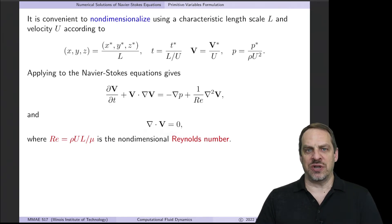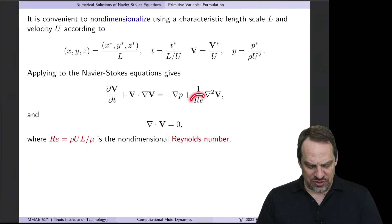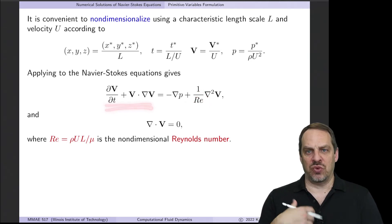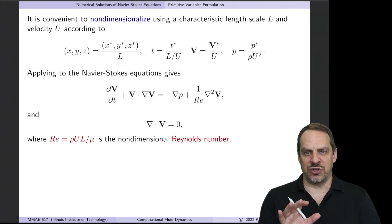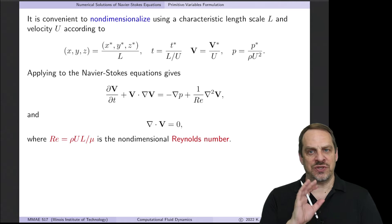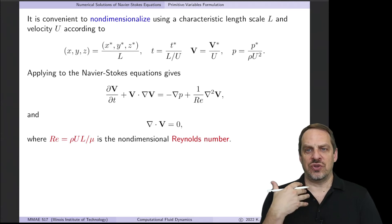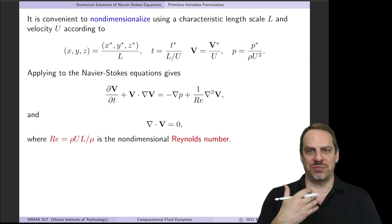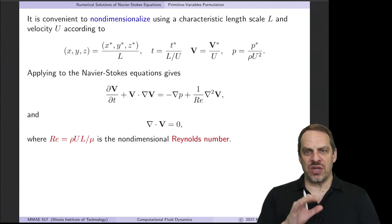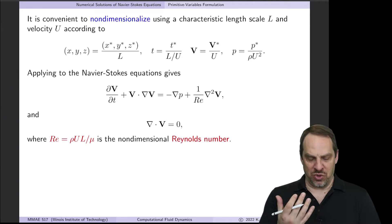We also have continuity: ∇·v = 0. One thing you'll notice is as the Reynolds number gets bigger, the influence of the convection terms becomes more prominent — and that's where the non-linearity is. The v·∇v terms are the non-linear terms we've discussed before with upwind differencing and so forth. Those non-linear terms become more prominent as the Reynolds number increases. As the Reynolds number goes up, your flow is more likely to be turbulent, messy, and much more complicated — because of this non-linearity becoming more and more prominent.